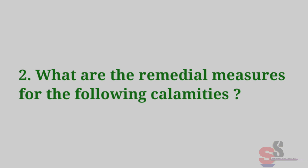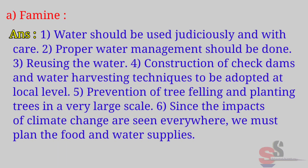Question 2: What are the remedial measures for the following calamities? A. Famine. Answer: Water should be used judiciously and with care. Proper water management should be done. Reusing water, construction of check dams, and water harvesting techniques should be adopted at the local level. Prevention of tree felling and planting trees on a large scale is important since impacts of climate change are seen everywhere.